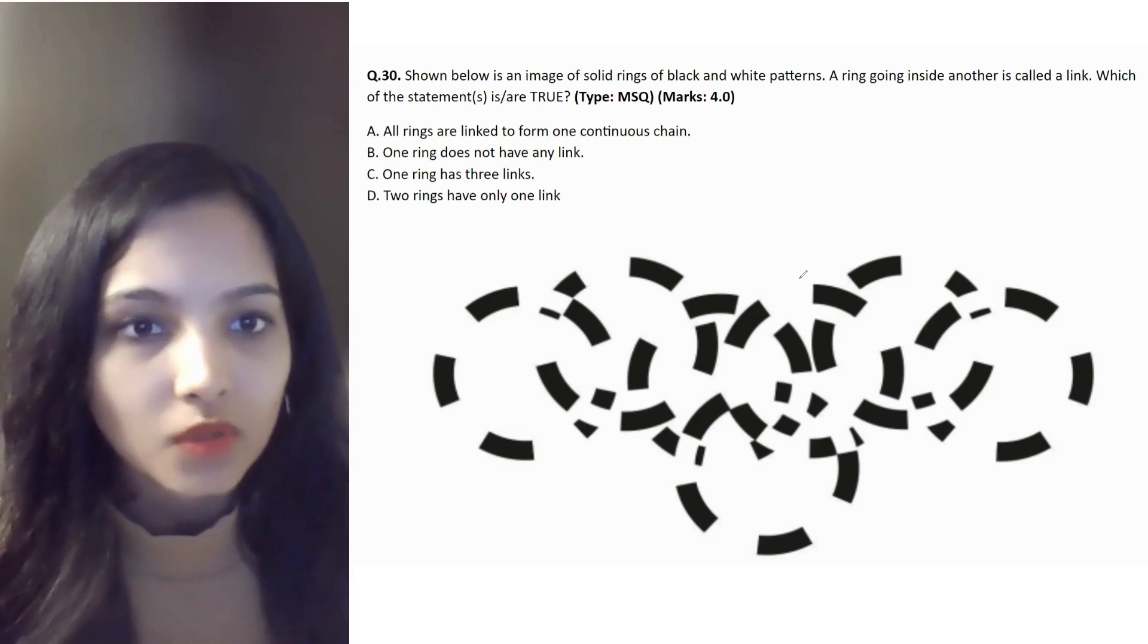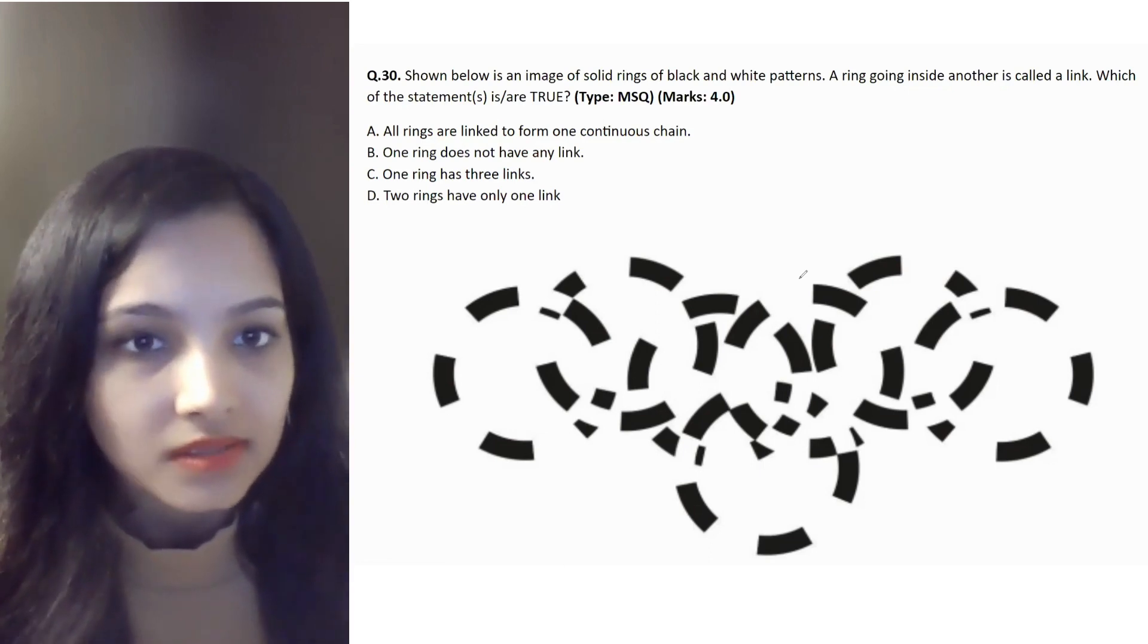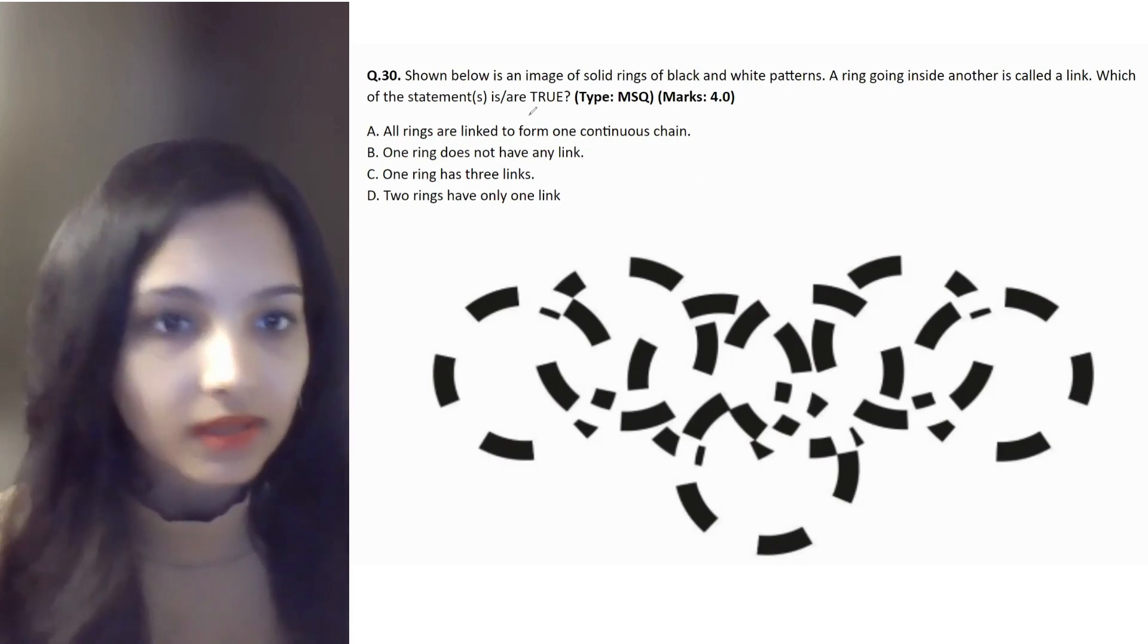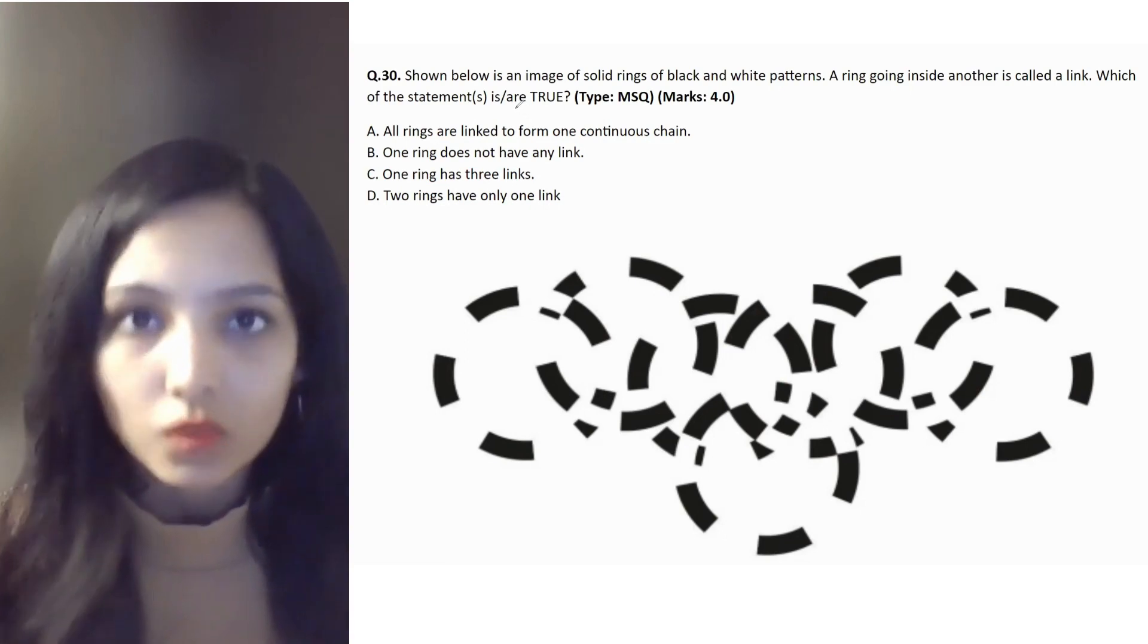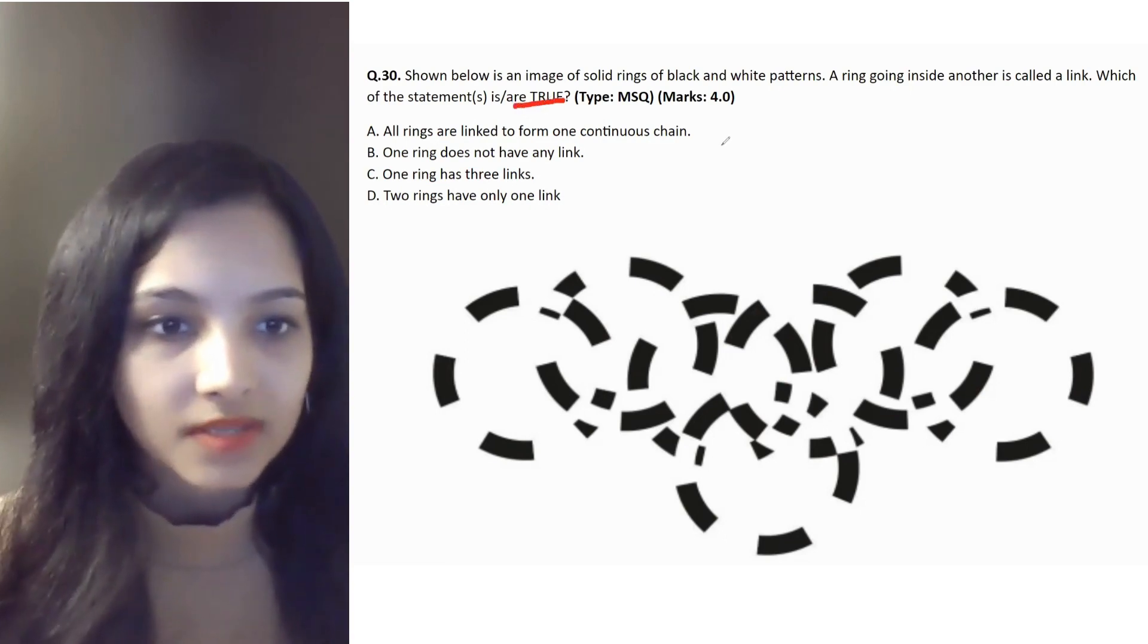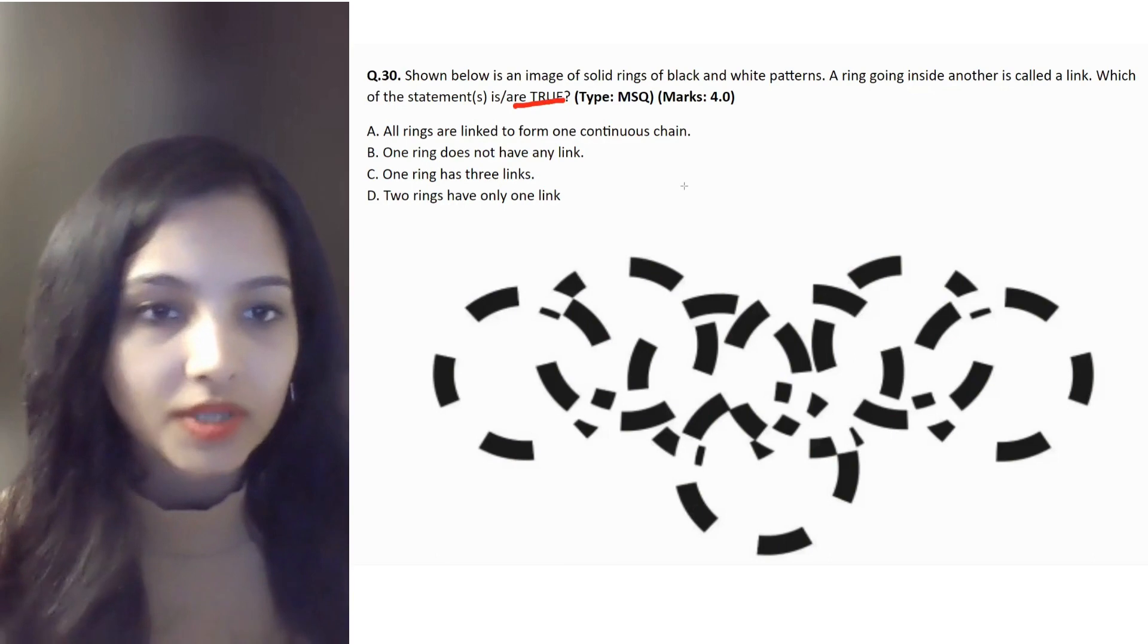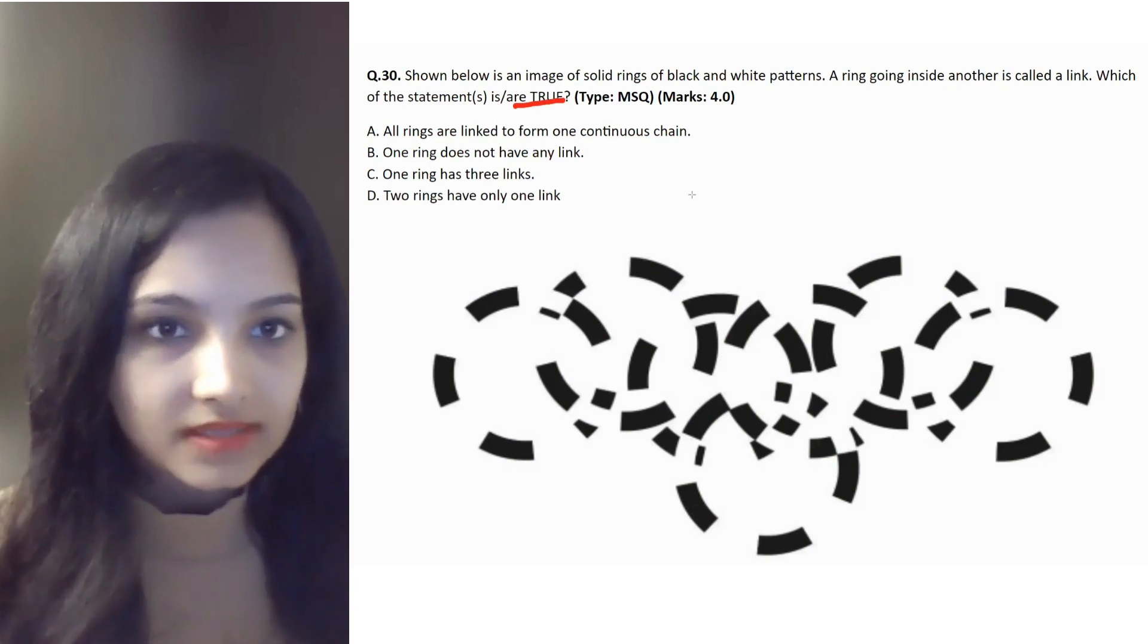Shown below is an image of solid rings of black and white patterns. A ring going inside another is called a link. Which of these statements is or are true? There are four statements given. Quickly look at the question image. It seems like a chain, right? Let's read the statements.